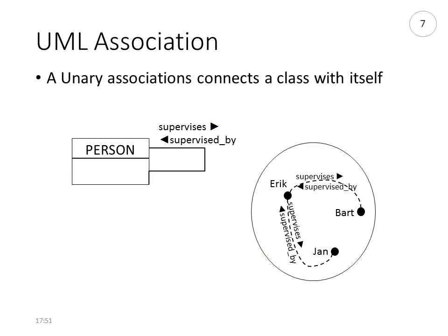What can also happen is that you have an association from a class to itself. If you want to express the fact that people can be related to each other via a supervisors relationship, then you have an association — supervisors, or supervised by, depending on the direction you read it. In the instance-level example, Eric supervises Bart and Bart is supervised by Eric; Eric also supervises Jan and Jan is supervised by Eric.